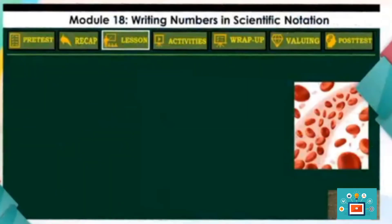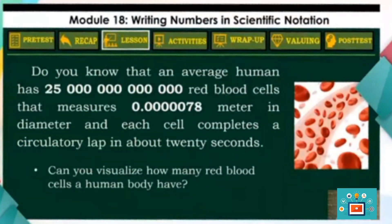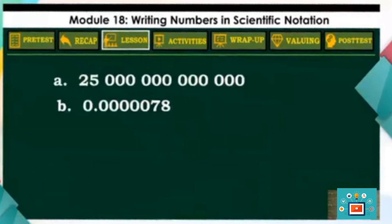Let us take a look at this problem. Do you know that an average human has 25 trillion red blood cells that measure 7,810 millionths of a meter in diameter, and each cell completes a circulatory lap in about 20 seconds? Can you visualize how many red blood cells a human body has, and how small they are?